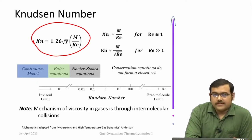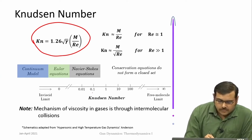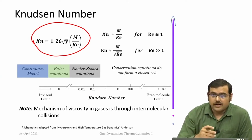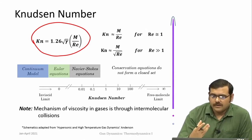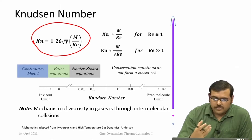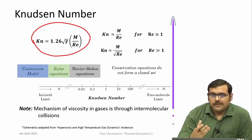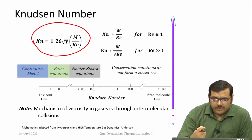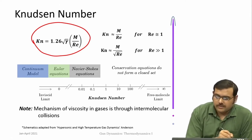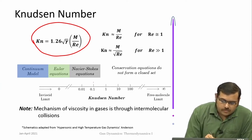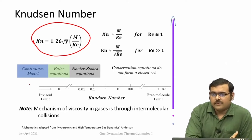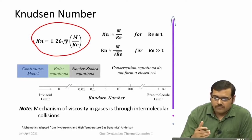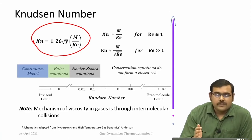Generally, when Knudsen numbers are small, we are in the continuum regime — meaning the small control volume considered for analysis is large enough to contain a large number of molecules, so the molecular mean free path is much less than the typical length scale. This is true when Knudsen numbers are less than about 0.1. Small Knudsen numbers mean continuum flow; if Knudsen numbers approach or exceed 1, that is not continuum flow and the Navier-Stokes equations do not hold good.